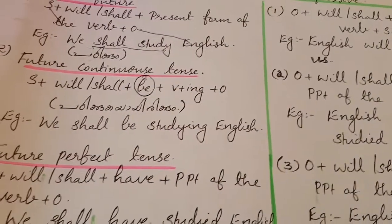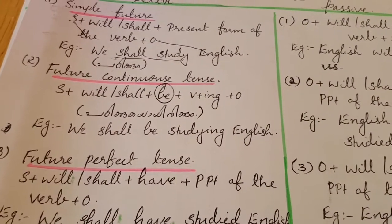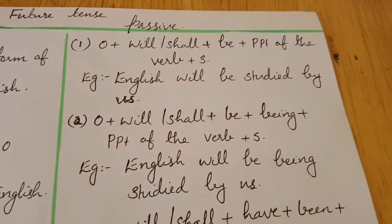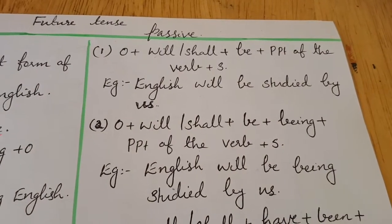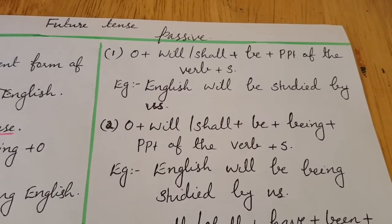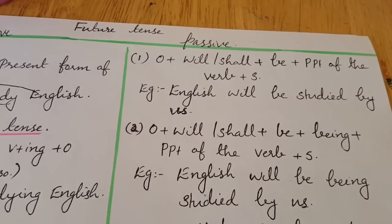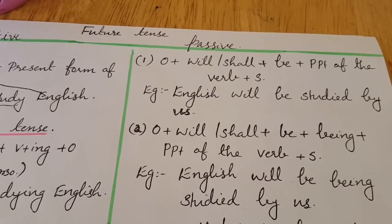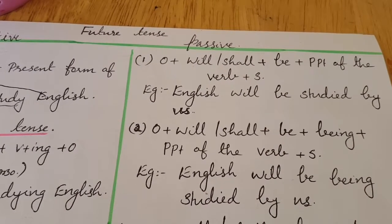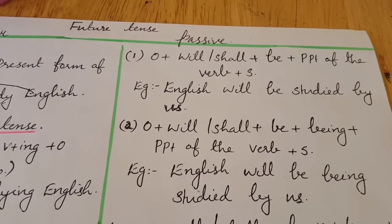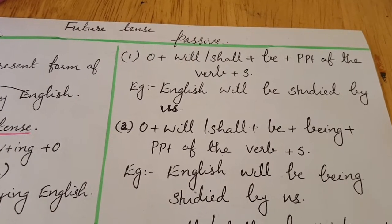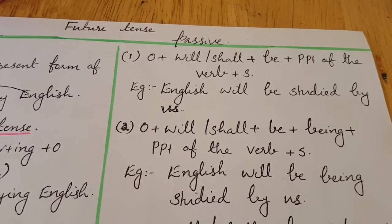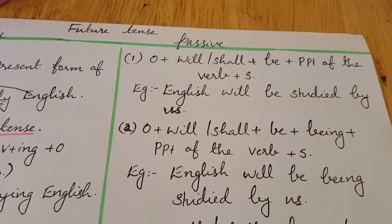Next: future continuous tense passive. The active form is subject plus will or shall plus be plus ing-form of the verb plus object. For passive, the formula becomes: object plus will or shall plus be plus being plus past participle of the verb plus subject. For example: 'English will be being studied by us.' The key addition here is 'being' — don't forget that.